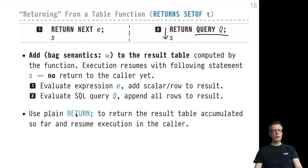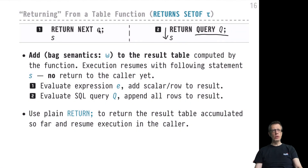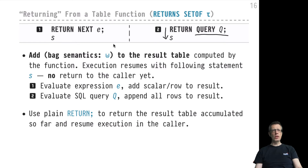This is a way around the fact that we can only deal with cell values or a single row, yet still accumulate an entire table of results. Note that you can freely mix RETURN NEXT and RETURN QUERY in a set-returning function. RETURN NEXT E always adds a single row; RETURN QUERY adds the entire result of query Q. Of course the schema and types of Q and E must be compatible. Let's switch over to the terminal to see how that works in practice.